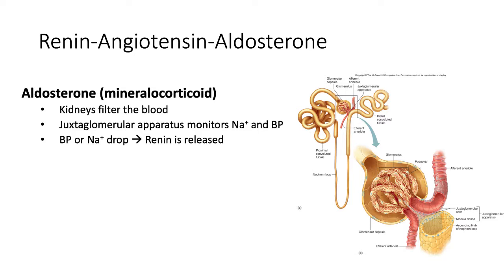The renin-angiotensin-aldosterone loop is perhaps the most complicated of the homeostatic feedback mechanisms. It starts in the kidneys. Within each nephron of the kidney is an area called the juxtaglomerular apparatus. This area monitors the blood pressure of the incoming blood and the sodium levels of the filtrate, utilizing mechanoreceptors to measure the stretch of the incoming blood vessel and chemoreceptors to measure how much sodium is available in the filtrate. When either the blood pressure or sodium levels get too low, the cells of the juxtaglomerular apparatus release a hormone called renin.